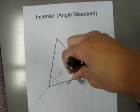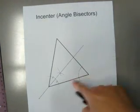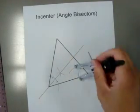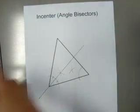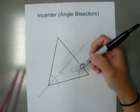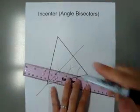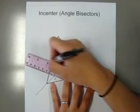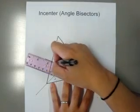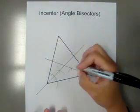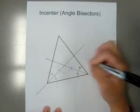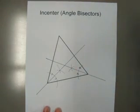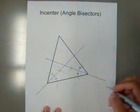On my second angle here, I'm going to make that arc and also make an X. Connecting the X with the vertex, I'm going to make my second angle bisector. I'm going to use two tick marks since it's different than my first angle.